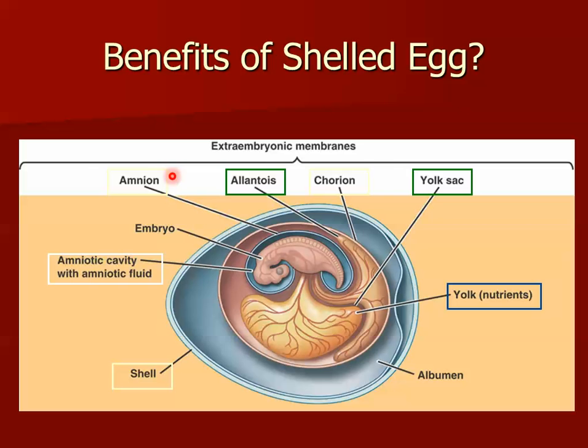Amniots are named after the amnion membrane. The amnion forms a little sac around the growing embryo which contains the amniotic fluid. Here's the embryo in its own little puddle, its own little pond water. So the embryos no longer have to develop in a body of water.